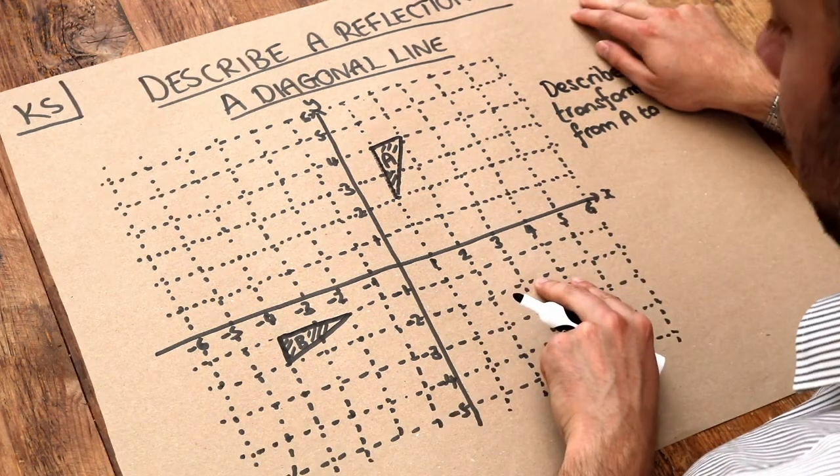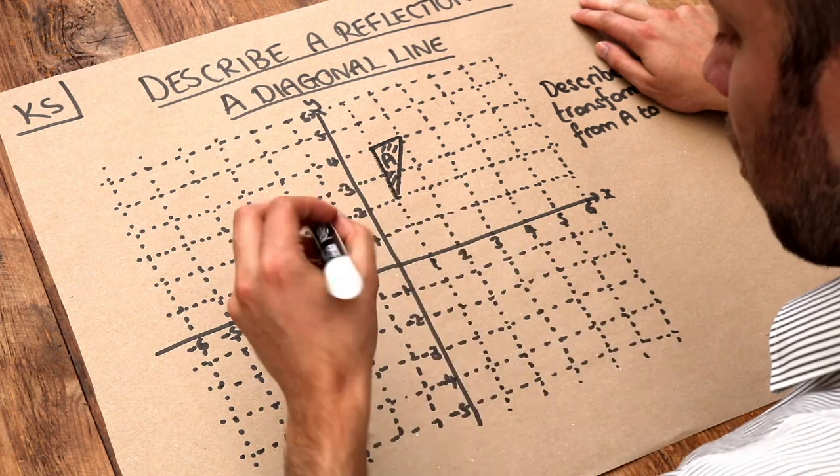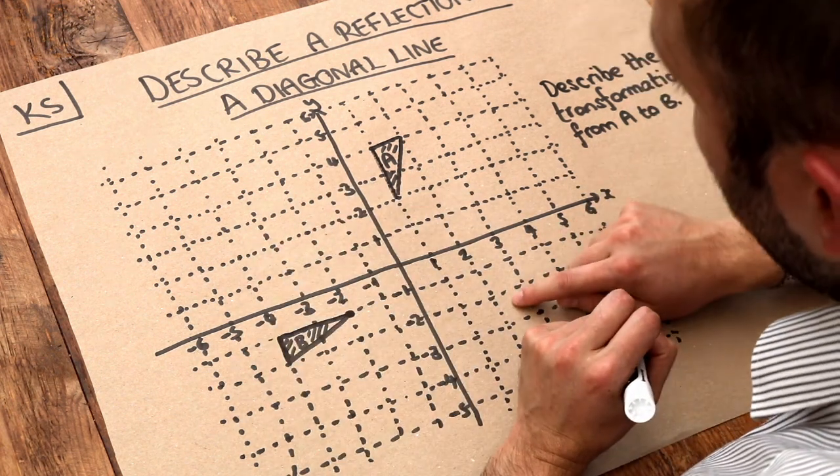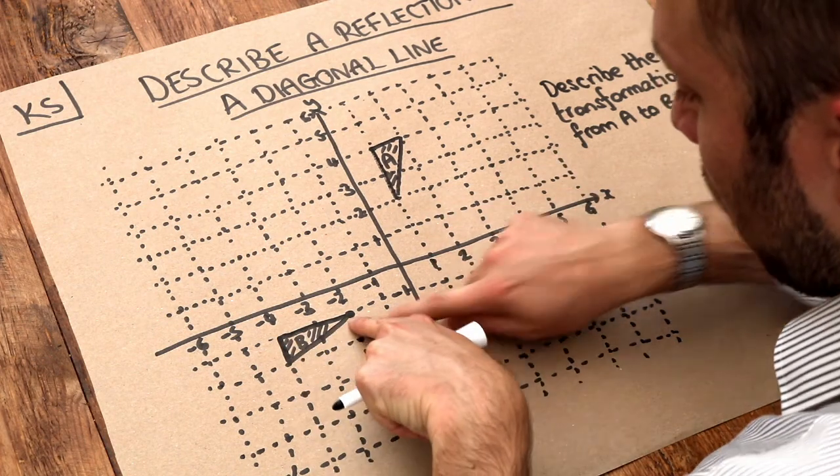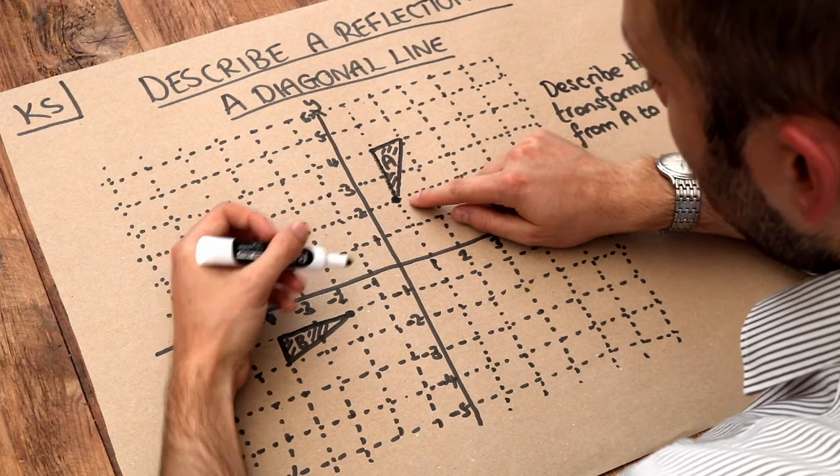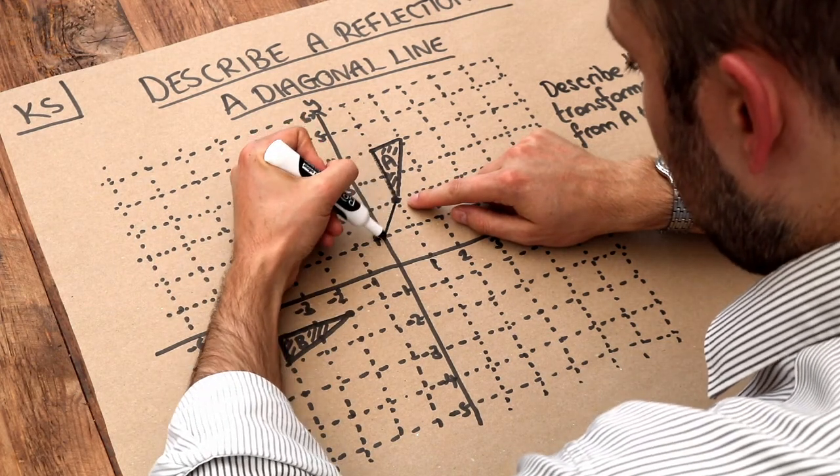So let's try and identify this line of reflection first. Remember I had an approach of picking a point on one of the shapes and the equivalent point on the other shape. We can see this is the pointy bit here, that's the pointy bit there. And then if you go halfway between these, if you draw this line here.